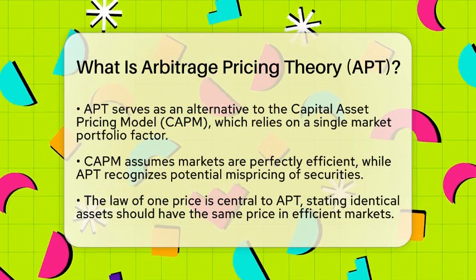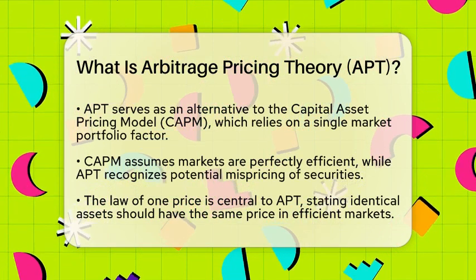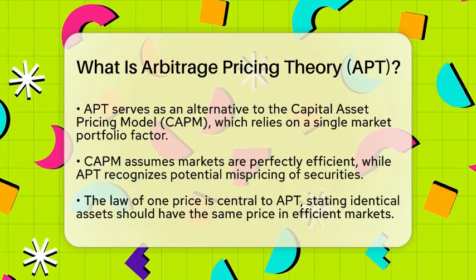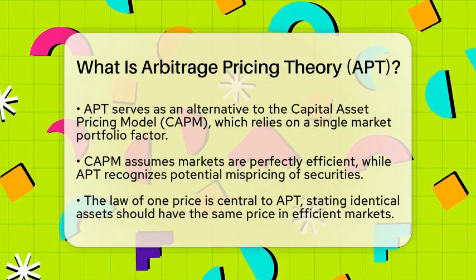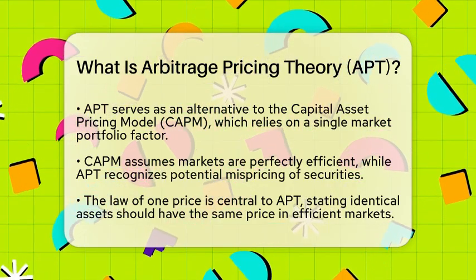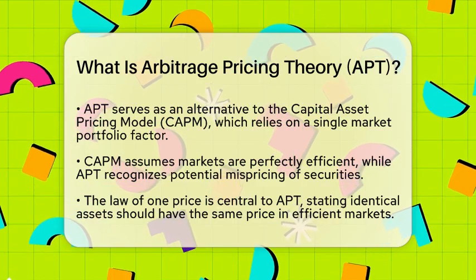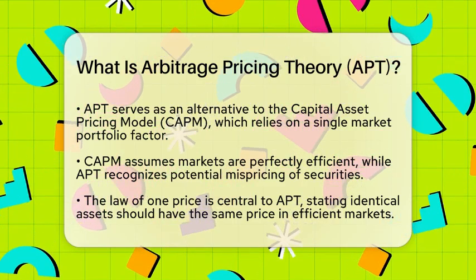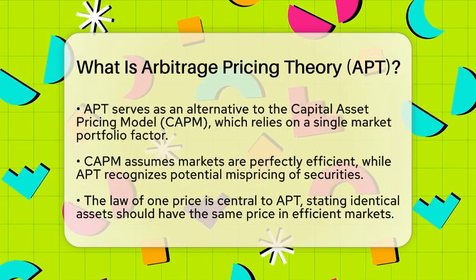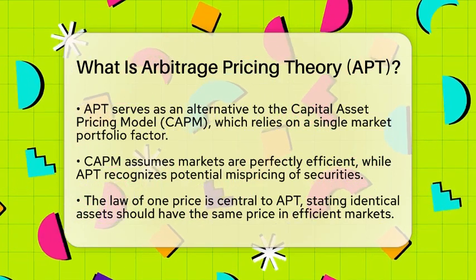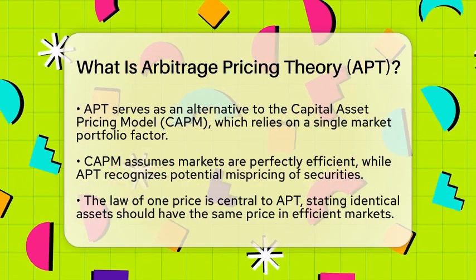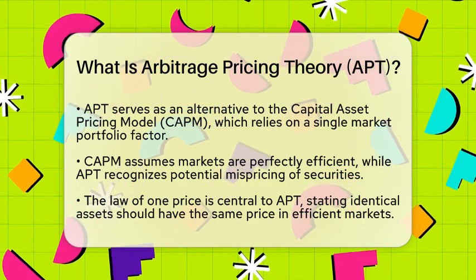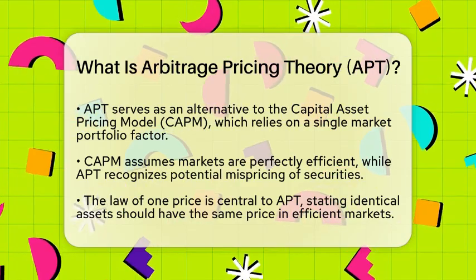Arbitrage pricing theory was created as an alternative to the capital asset pricing model. The capital asset pricing model relies on just one factor, which is the market portfolio, and assumes that markets are perfectly efficient, meaning all prices reflect their true value. However, APT acknowledges that sometimes markets can misprice securities.